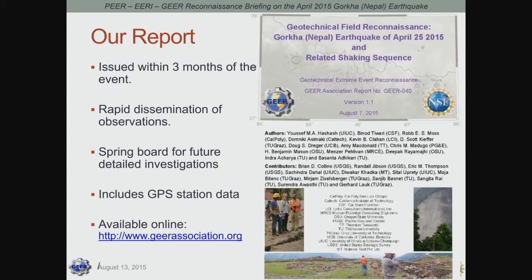An important aspect of our work in the GEAR team is to produce a report within a short period of time to disseminate important observations from the event. We were able to issue our report within about three months, and we're currently working on an update. The report serves not only to document observations but also as a springboard for future detailed investigations. We were fortunate to include GPS station data, and the report is available online at the GEAR Association website.